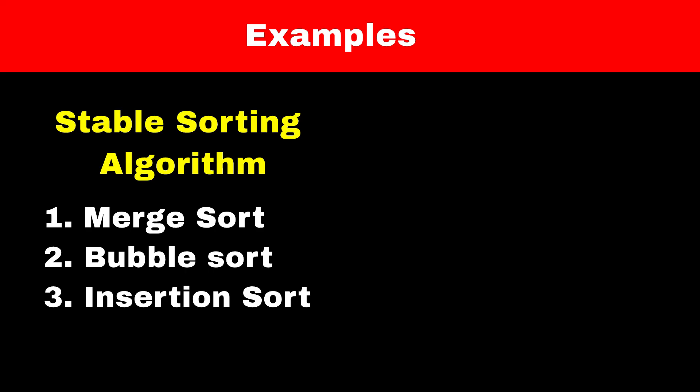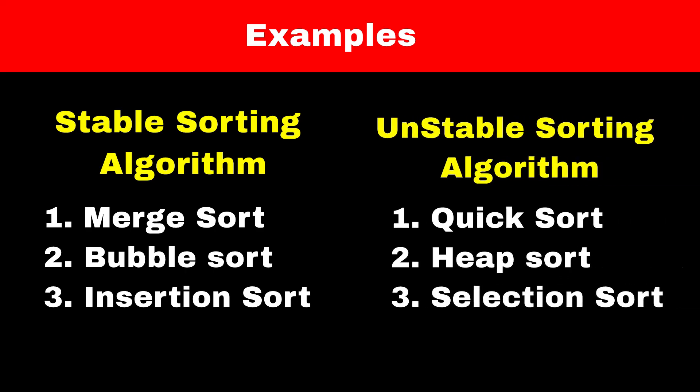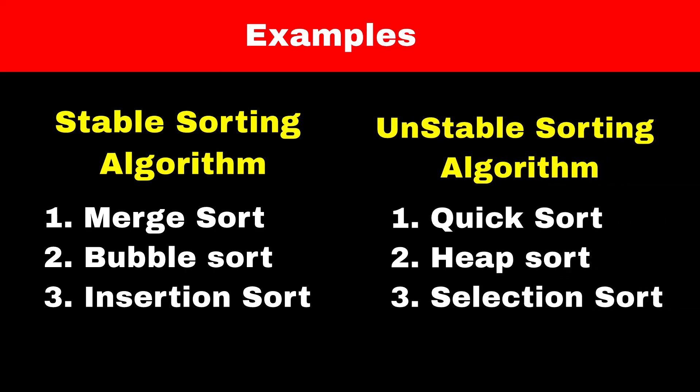Some examples of stable sorting algorithms are Merge sort, Insertion sort, and Bubble sort. Examples of unstable sorting algorithms are Quick sort, Heap sort, and Selection sort. Follow my channel for more such videos.